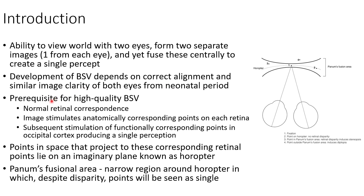Now let us discuss the prerequisites for high quality BSV. There should be normal retinal correspondence, that is, images stimulate anatomically corresponding points on each retina, with subsequent stimulation of functionally corresponding points in the occipital cortex producing a single perception. The points in space that project to these corresponding retinal points lie on an imaginary plane known as the horopter.